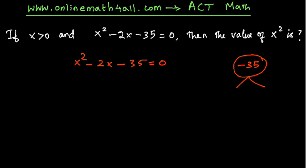Now, I am going to get two factors for -35 so that the product of two factors will be equal to -35 and the sum of two factors will be equal to -2, that is the coefficient of x.